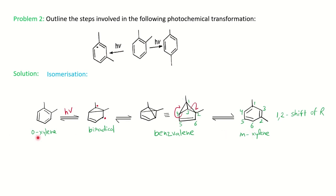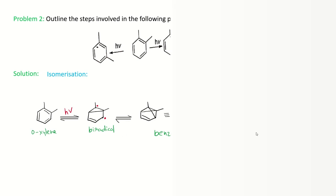So basically here the 1-2 shift is occurring, 1-2 shift of alkyl group, and gives you meta-xylene. So basically whenever the mechanism they ask you conversion of ortho-xylene to meta-xylene, you can show the benzovalene structure as an intermediate. So through benzovalene, meta-xylene will form.